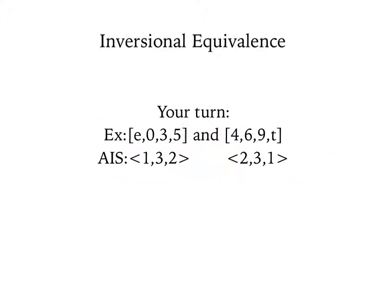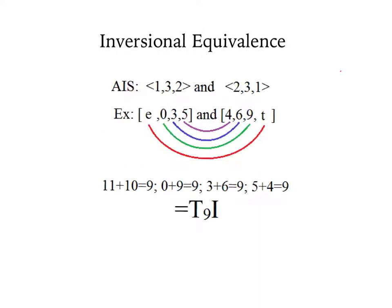Now you try. These two sets are inversionally related, as we can see from the AIS. Can you find the index number? Pause your video now and find the transposition. By making a rainbow, we can see the index number is 9, so we would write T9I to describe the inversional equivalence of these two sets.